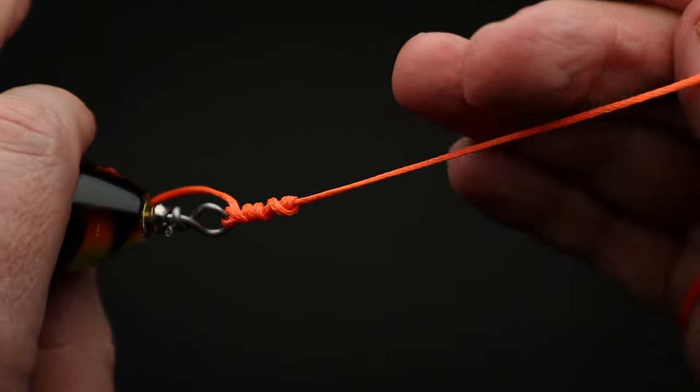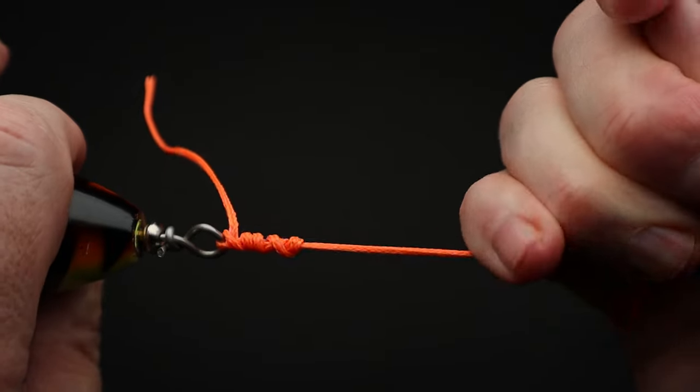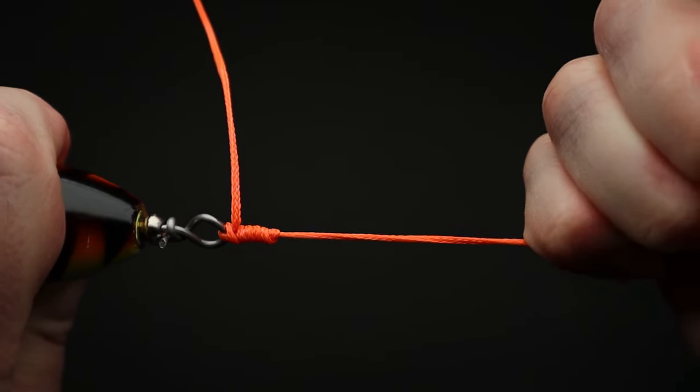Next, get a good grip on the lure and pull firmly on the main line to tighten up the knot.